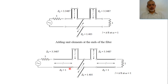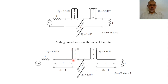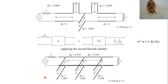We are going to add a transmission line section on the left side and another transmission line section on the right side. In this case, we have a series inductance connected to a transmission line section. By Kuroda's identity, we can transfer this series inductance from one side to become a shunt capacitance on the other side. Similarly, we can move the series inductance on the other side to become a shunt capacitance on that side.